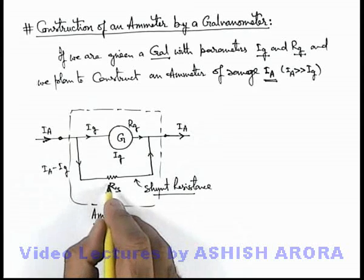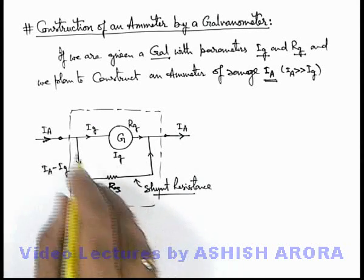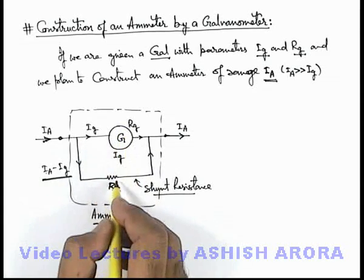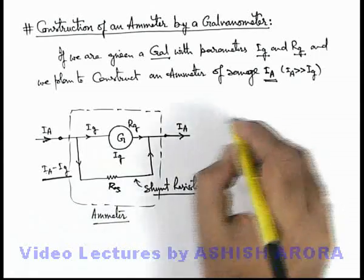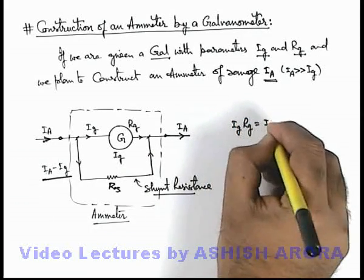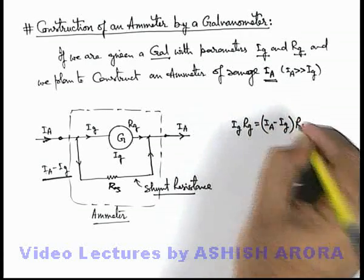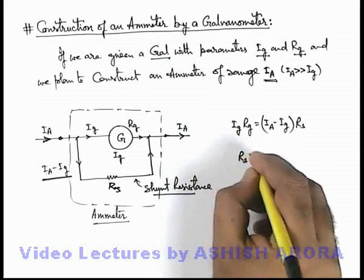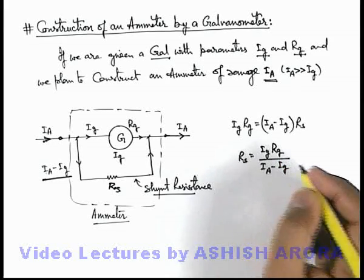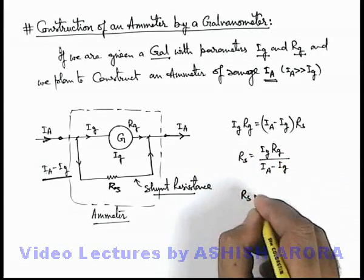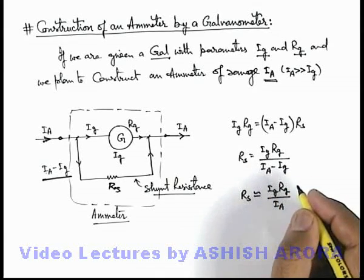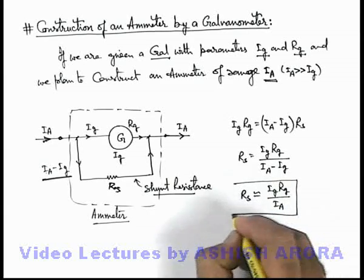Now we need to calculate the appropriate value of shunt resistance which will exactly bypass current i-a minus i-g through it. Since the coil r-g and the shunt resistance are connected in parallel, the potential difference across these two will always remain the same. So we can write: i-g × r-g = (i-a minus i-g) × r-s. Simplifying this, we get the value of shunt resistance r-s = (i-g × r-g) / (i-a minus i-g). Since i-g is very small compared to i-a, r-s can be approximately written as (i-g × r-g) / i-a, neglecting i-g in comparison to i-a.